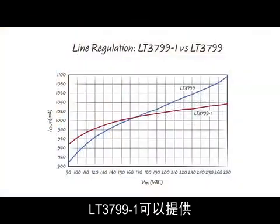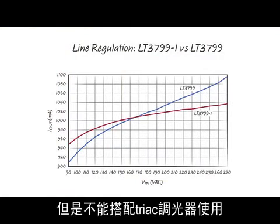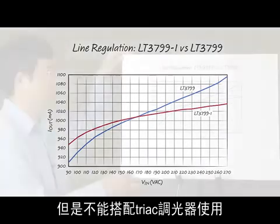The LT3799-1 provides better line regulation than the LT3799 but cannot be used with triac dimmers.